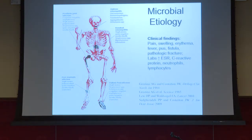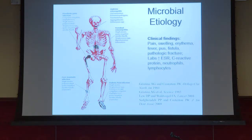The clinical signs we see are pain, swelling, redness, fever — the cardinal signs of inflammation — plus pus, fistula, and potentially pathologic fracture where the bone breaks. Laboratory findings are nonspecific: increased erythrocyte sedimentation rate, C-reactive protein, increased neutrophils or lymphocytes depending on whether it's acute or chronic. But again, not pathognomonic.